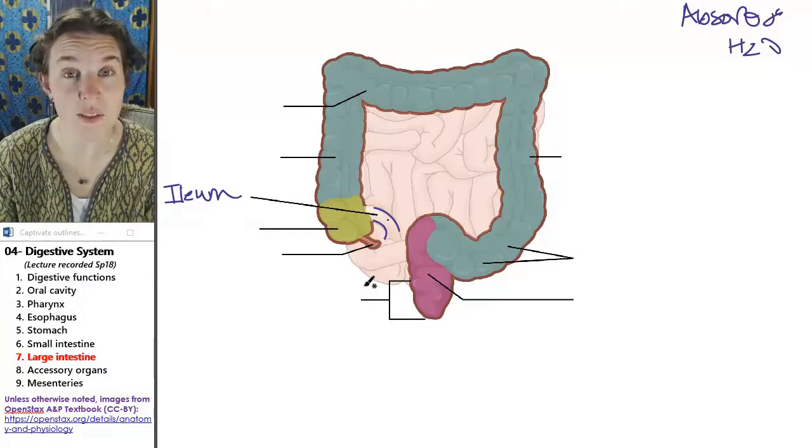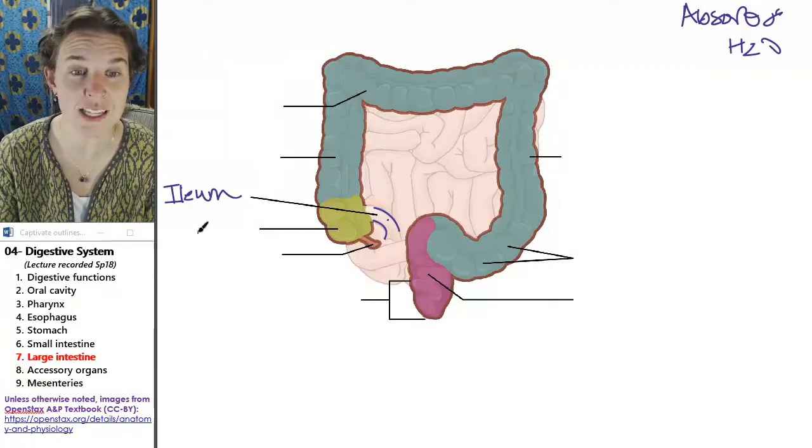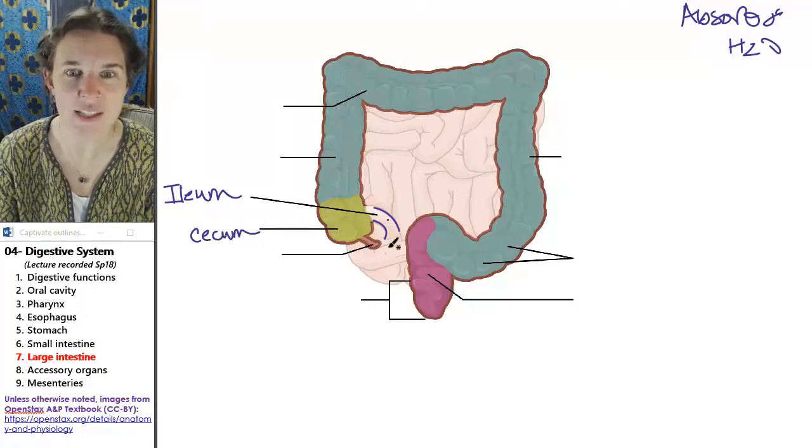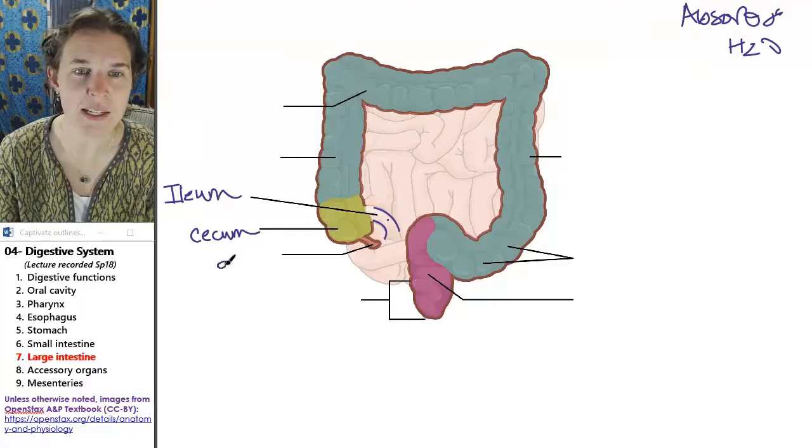The first part of the large intestine is called the cecum, and hanging off the cecum is the appendix.